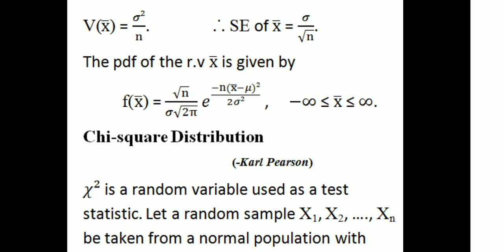Therefore, since x-bar follows a normal distribution with mu and sigma/root n, the probability density function of x-bar is: f(x-bar) = (root n / (sigma * root(2*pi))) * e raised to (−n*(x-bar − mu)² / (2*sigma²)), where x-bar varies from minus infinity to infinity. Next time we will cover the chi-square distribution.